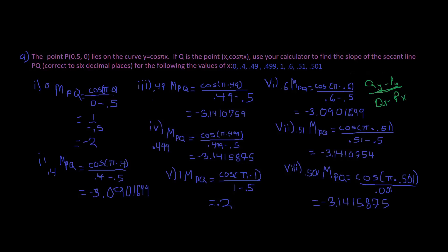The point P lies on the curve y equals cosine pi x. If Q is the point x comma cosine pi x, use your calculator to find the slope of the secant line P to Q, correct to six decimal places. If Q is a point, the first thing we need to know is what this is — the slope of the secant line m sub PQ. That's what we're trying to find.